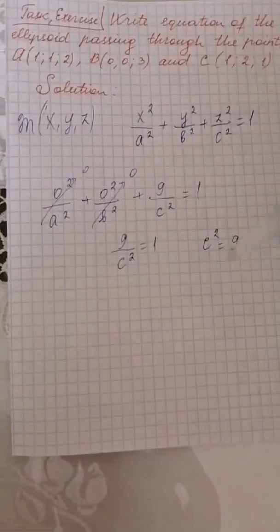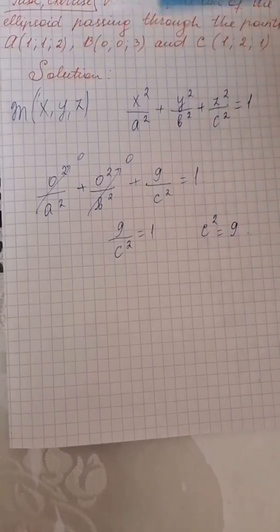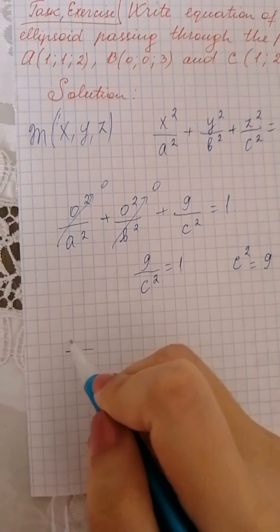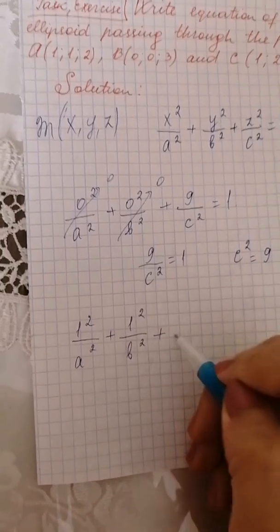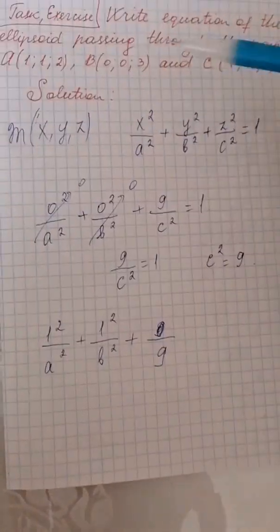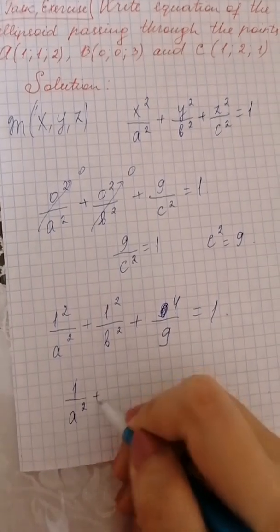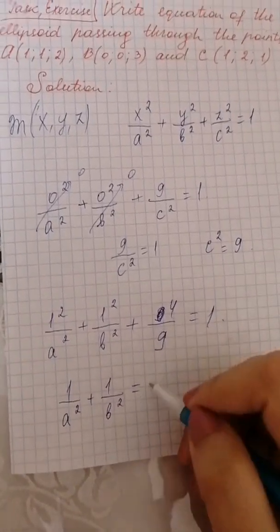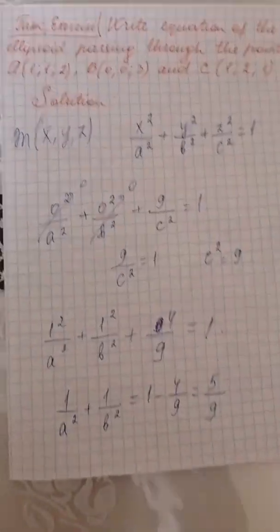Secondly, let's substitute point M by point A with coordinates (1, 1, 2). The canonical equation becomes 1 squared over a squared plus 1 squared over b squared plus 2 squared over c squared equals 1. Since c squared is 9, we get 1 over a squared plus 1 over b squared plus 4 over 9 equals 1, so 1 over a squared plus 1 over b squared equals 5 over 9.